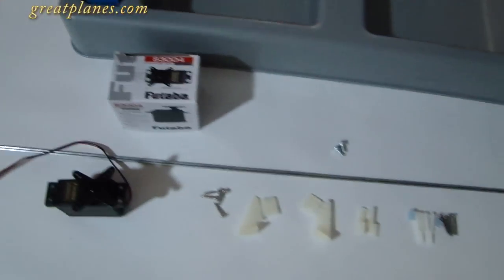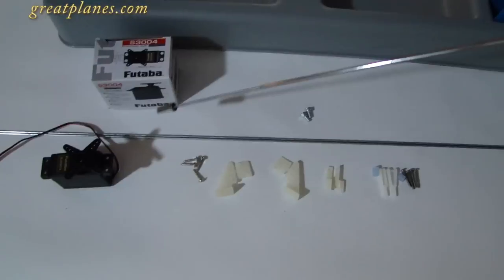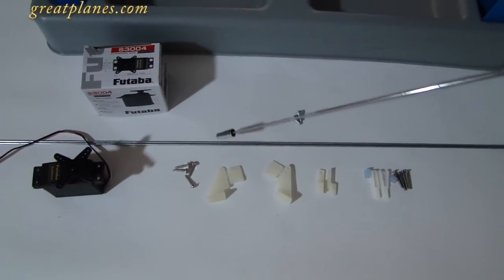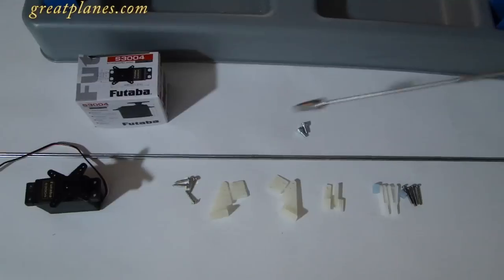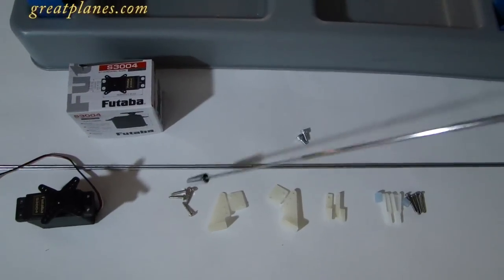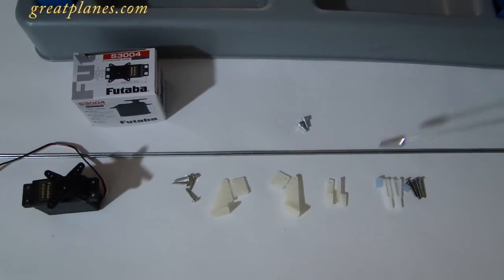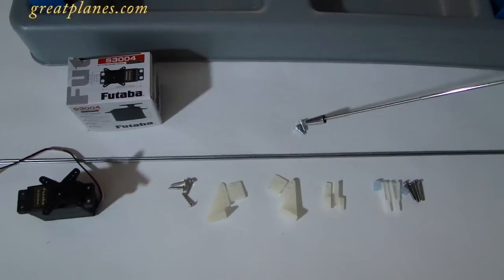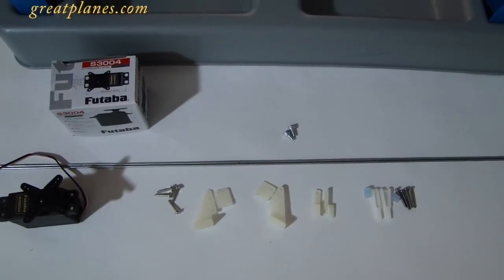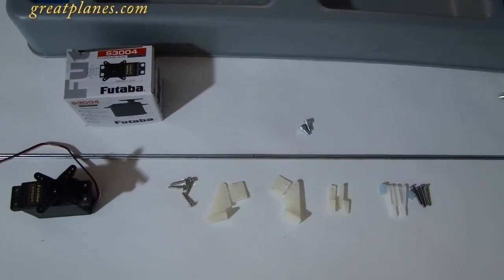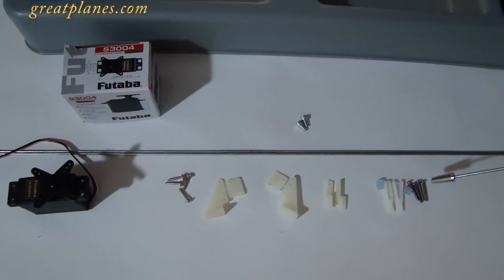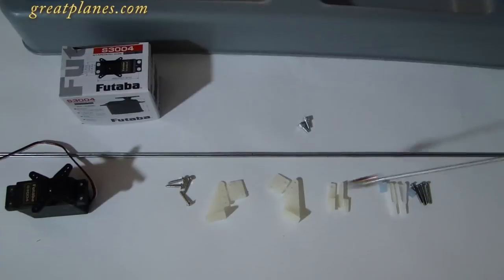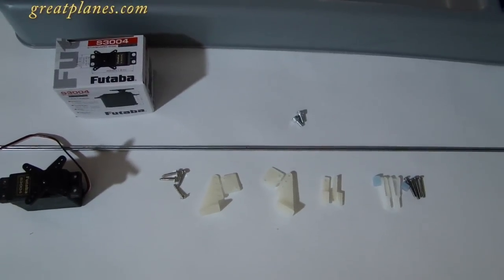The servo that we're going to be using for the rudder is a Futaba S3004. These two push rods are for the elevator and the rudder. We have our control horns, our fasteners for our servo, our fast links. These are the two fasteners that are going to be installed inside the wheel collars to help secure those two push rods. We have our clevis, clevis retainers, and hardware that goes through our flight controls to secure our horns.